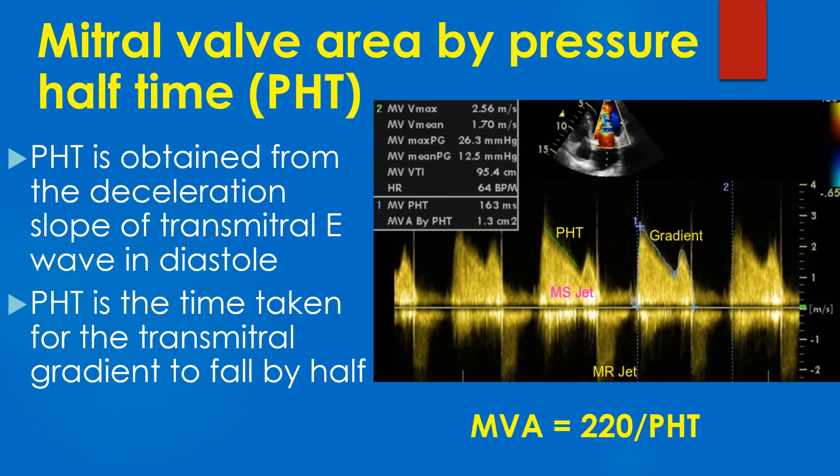Mitral valve area can be estimated from the pressure half-time of the transmitral gradient. PHT is obtained from the deceleration slope of the transmitral E wave in diastole.